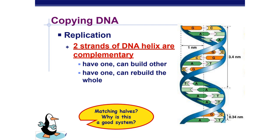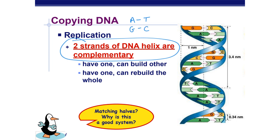We're not going to focus much on replication here — we'll cover it in depth during cell cycle and mitosis. The key thing you need right now is that the two strands are complementary: if I have an A, that goes with a T; if I have a G, that goes with a C. And remember, I've got those hydrogen bonds between them holding them together.